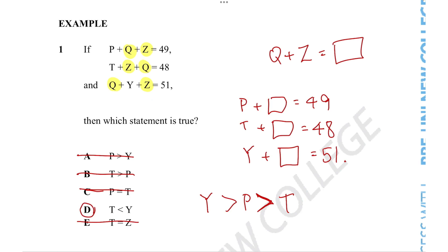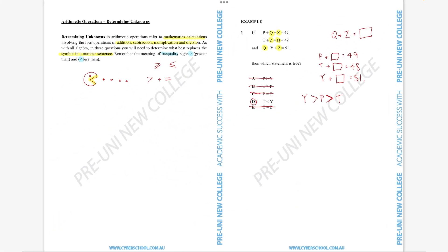That would be the strategy that you would follow whenever you're doing these types of questions. The number one goal is to try and reduce the number of different letters possible, which allows us to understand what's going on in the equations much better. That would be the kind of strategy I would follow whenever I am doing these determining unknown questions. I hope those strategies were of some help to you. Thanks everyone so much for listening.